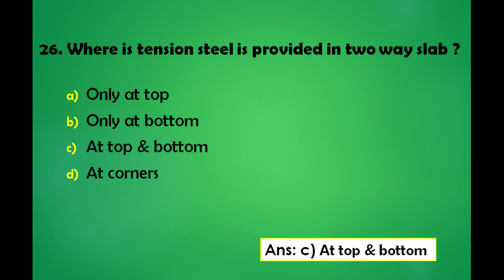Where is tension steel provided in a two-way slab? A) Only at top, B) Only at bottom, C) At top and bottom, D) At corners. The answer is: the tension steel is provided in a two-way slab at top and bottom.